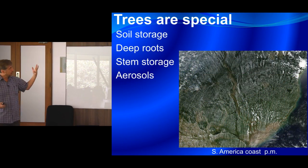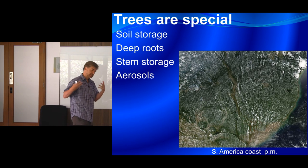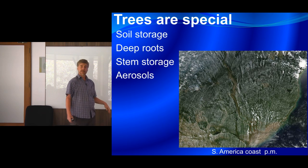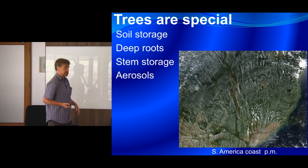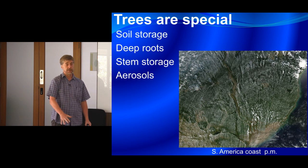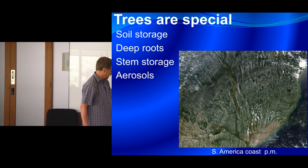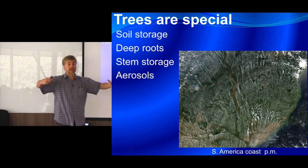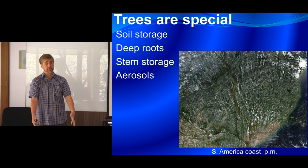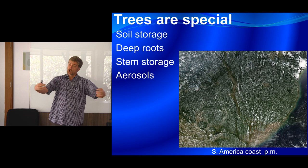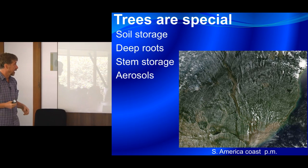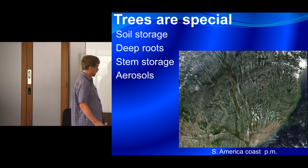Forests themselves have a lot of water in the soil — very good at accumulating moisture in deep organic soils. Trees also have incredibly deep roots, so they can access moisture deep in the soil profile even when the surface is dry. Trees also have a big reservoir of moisture in the trunk, so they can keep transpiring even when the water they're releasing is much higher than what they can pull through the roots. The tree will actually shrink through the day as it pushes water out, and the stem is replenished at night.